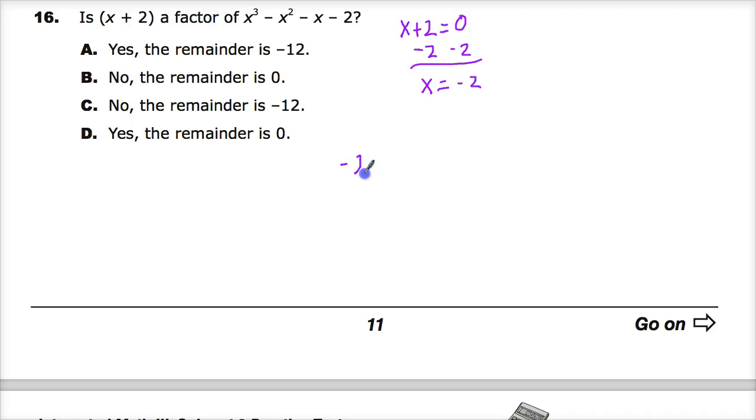So that will go here, 1, negative 1, negative 1, negative 2. Let's bring the first one down and then do 1 times negative 2, which gives you negative 2. Combine this together and get negative 3.